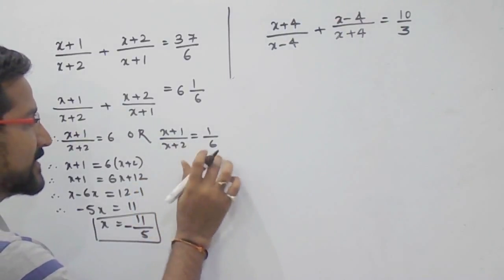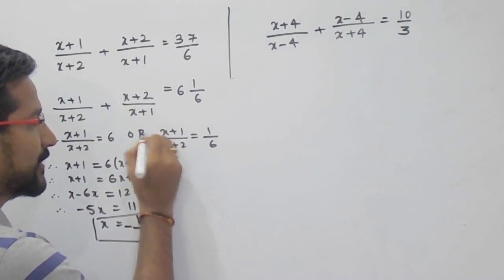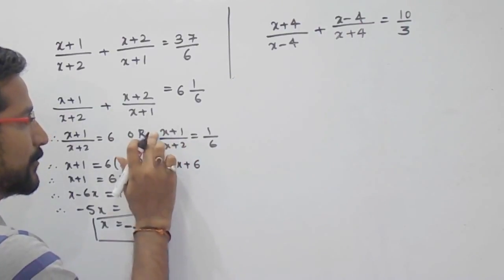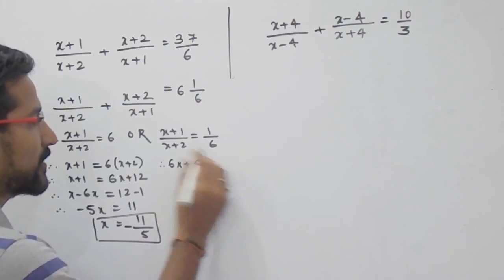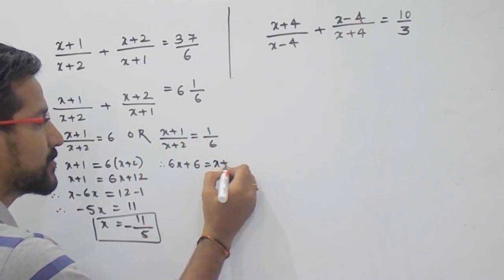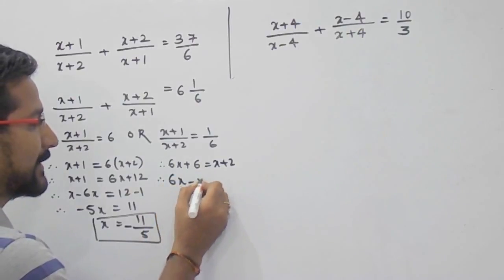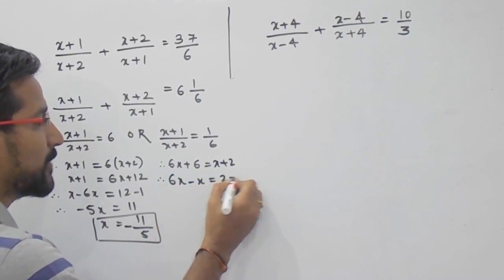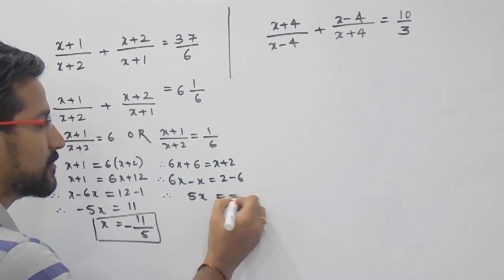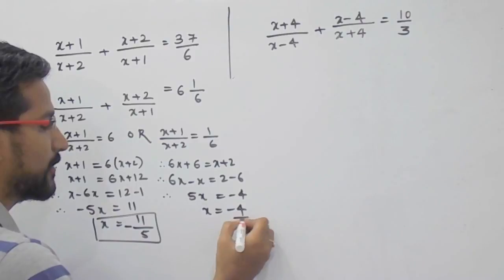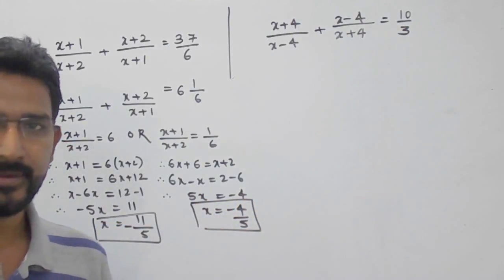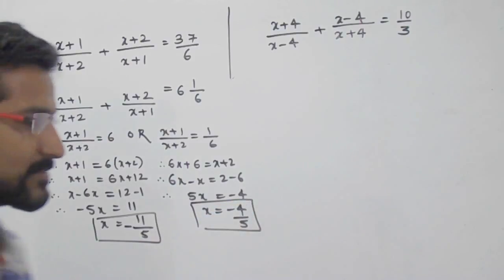For the second equation, (x+1)/(x+2) equals 1 by 6. Again, do cross multiplication: 6(x+1) equals x+2, so 6x+6 equals x+2. Then 6x minus x equals 2 minus 6, giving 5x equals minus 4, so x equals minus 4 by 5. The answers are x equals minus 11 by 5 and x equals minus 4 by 5.